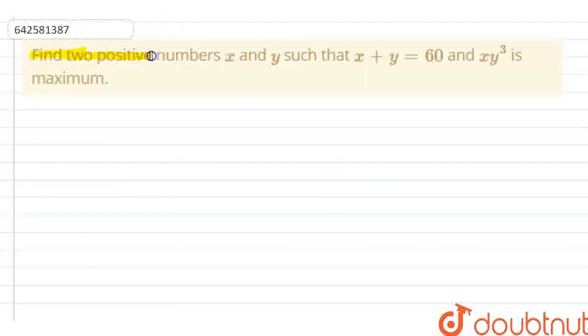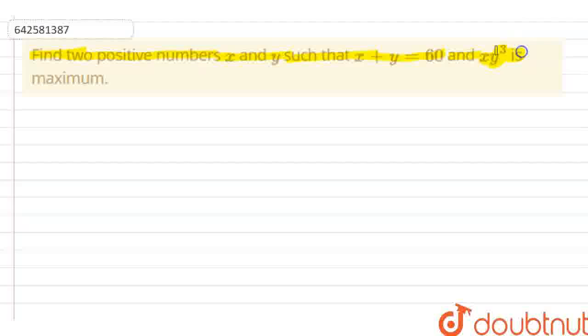The question is: find the two positive numbers x and y such that x plus y is equal to 60 and x into y cube is maximum.